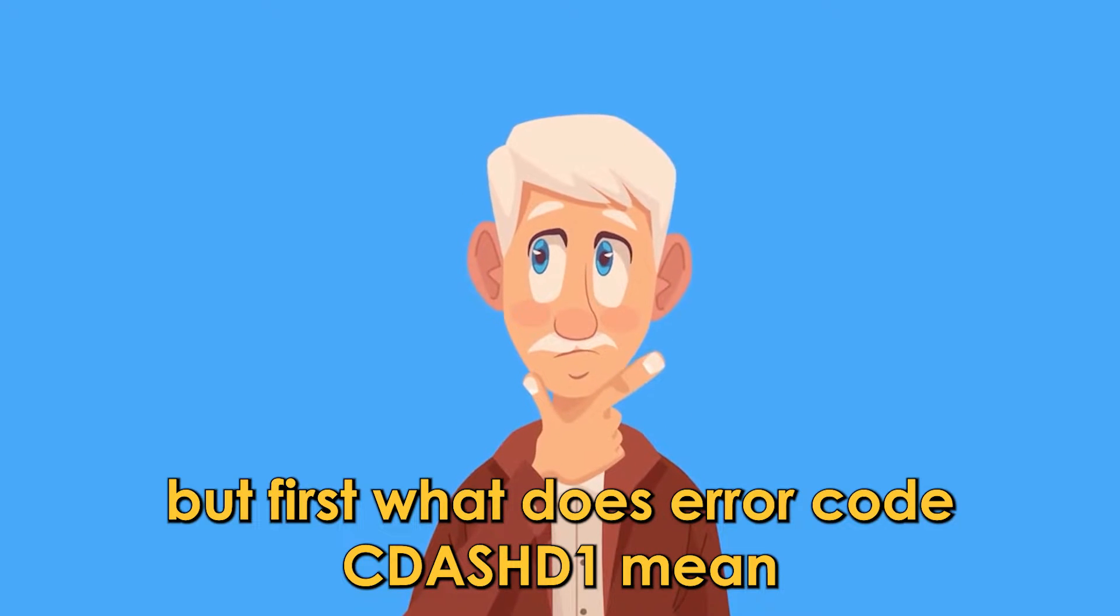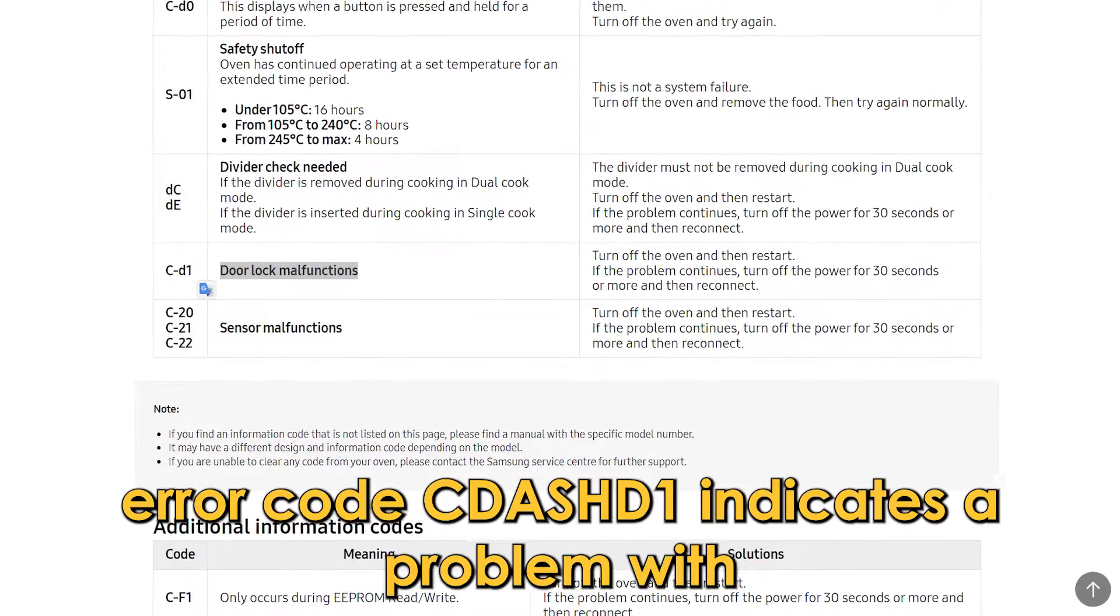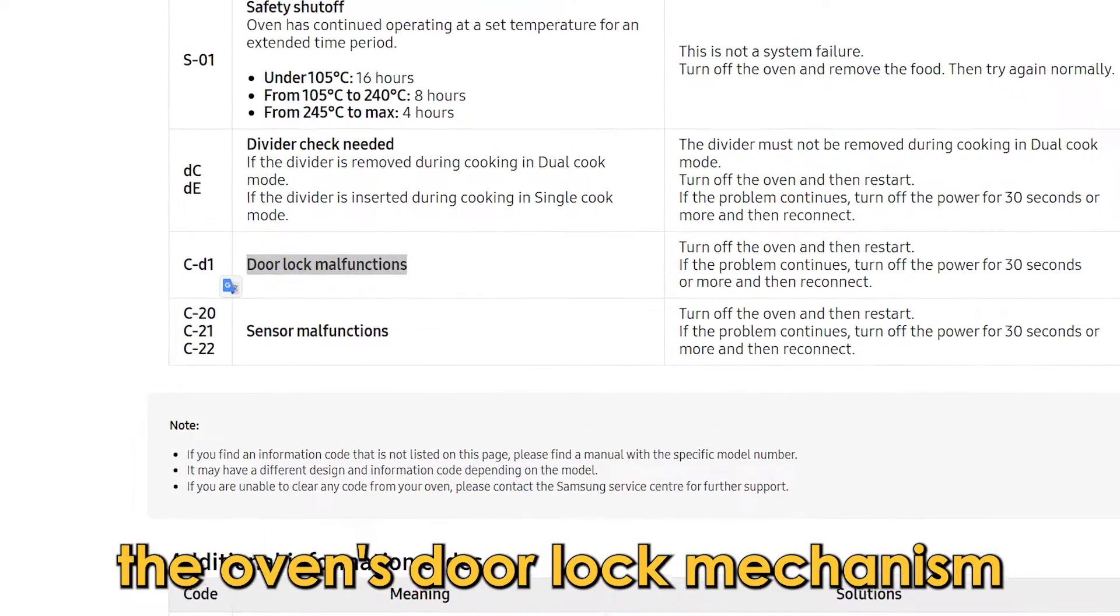But first, what does error code C-D1 mean? Error code C-D1 indicates a problem with the oven's door lock mechanism.